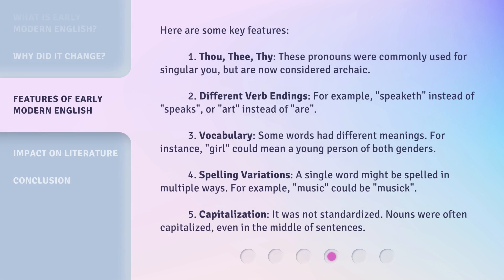Here are some key features of Early Modern English. First, thou, thee, and thy: these pronouns were commonly used for singular 'you,' but are now considered archaic. Second, different verb endings: for example, 'speaketh' instead of 'speaks,' or 'art' instead of 'are.'